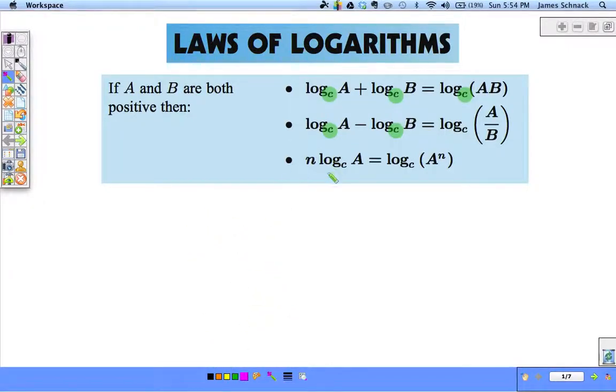Now here's one that's a little different. If we have a constant times log, we can rewrite that as log A to the n. This exponent, or this coefficient, becomes an exponent. And vice versa, we can alternate between these two. In solving equations with logarithms and simplifying logarithms, these properties become very important.